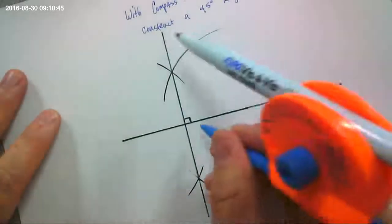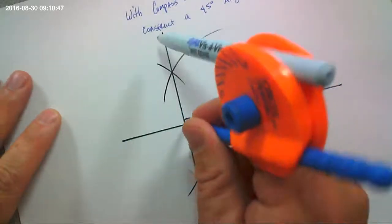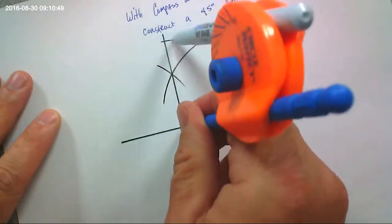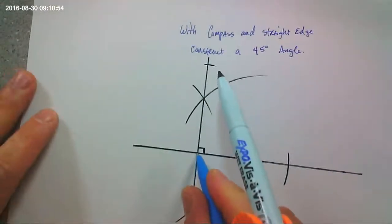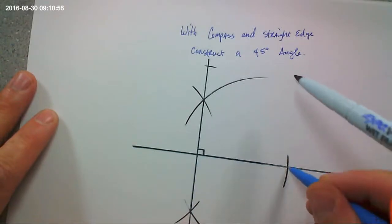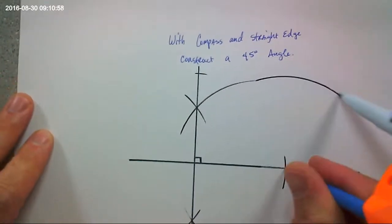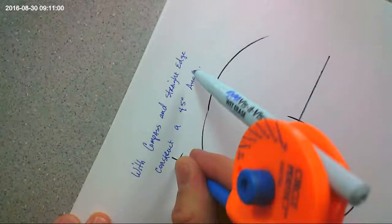So angle bisector, remember? Make an arc on each leg, right? So I made an arc on each leg. And then I take and I make an arc over here. Right? Like this. Okay.